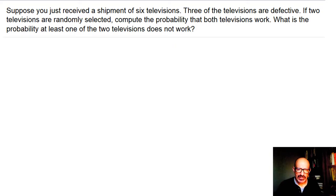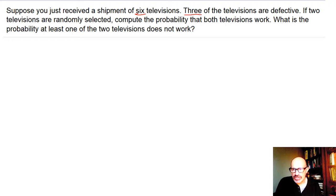Suppose you just received a shipment of six televisions. Three of the televisions are defective. If two televisions are randomly selected, find the probability that both televisions work. Notice how work and defective exclude each other exhaustively. There are three that are defective and three that work.